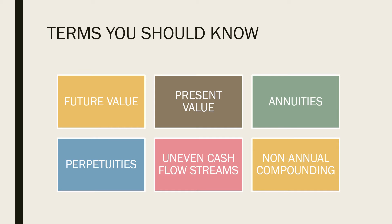When you say present value, this is the flip side of the future value. It tells us how much a certain amount of money will be worth at some future date assuming a certain rate of return. To compute the present value, present value is equal to future value in a year times 1 plus the rate of return we can earn.